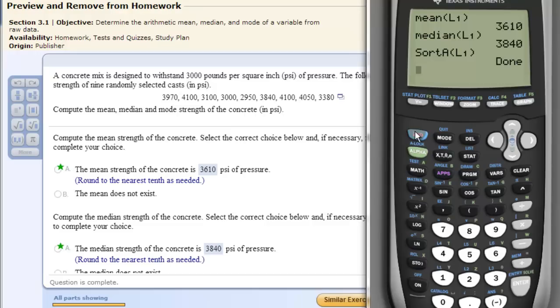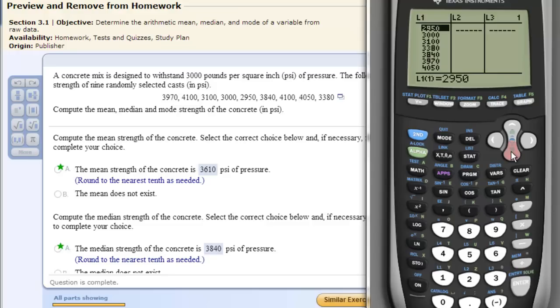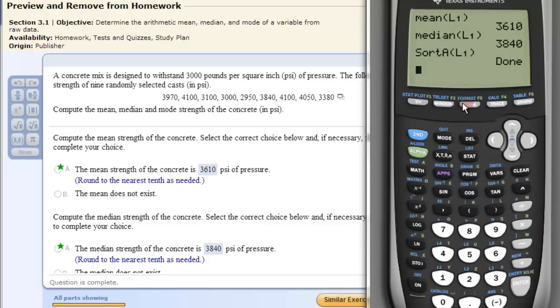Now when I go back into the STAT and edit, we see that our list one has been sorted. Now you can go through and find the mode. Remember the mode is the one that repeats the most times. There could be no mode if they're all just repeated once, or there could be more than one mode. So you go through here and you scan them all. You can actually do this maybe just with the data list as well, and you see that 4100 repeats twice. So that would be the mode.